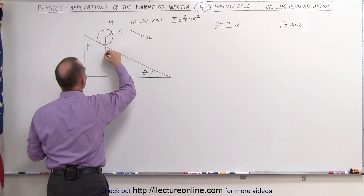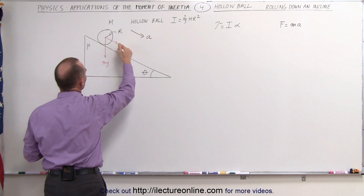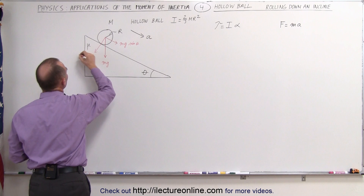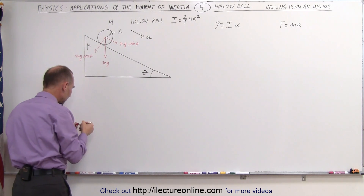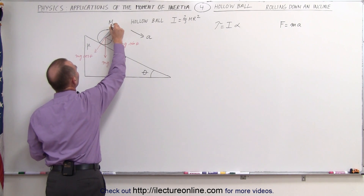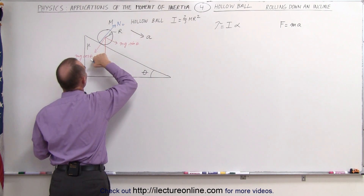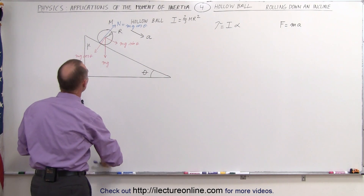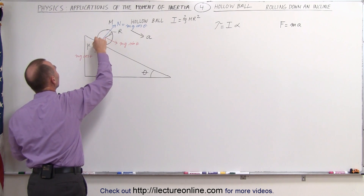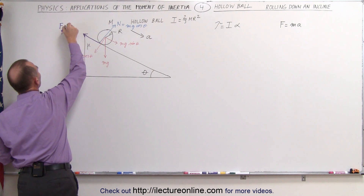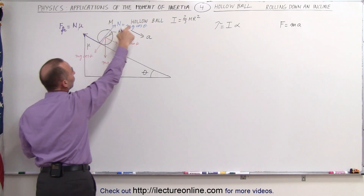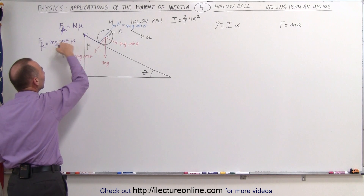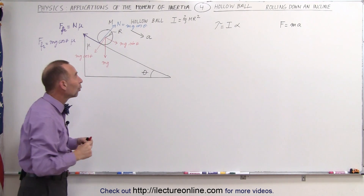We can see that gravity acts downward, equal to mg. We have two components: the one parallel to the incline, mg times sine of theta, which pulls the object down the incline, and mg cosine of theta, the perpendicular component of weight, which causes a normal force equal to mg cosine of theta. It's the normal force that provides the friction. The friction force is equal to the normal force times mu, so the friction force equals mg cosine theta times mu, and this provides the torque on the rolling ball.